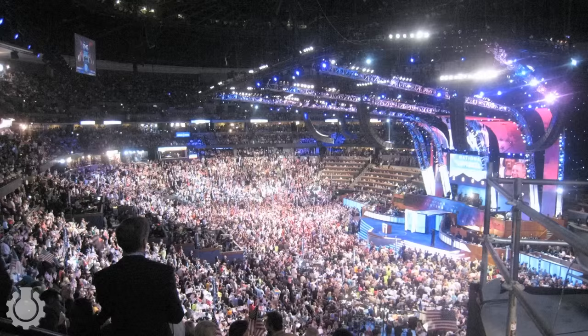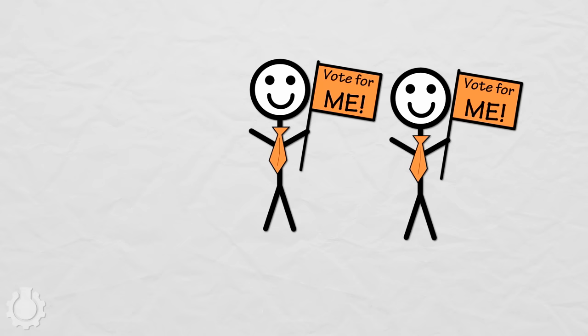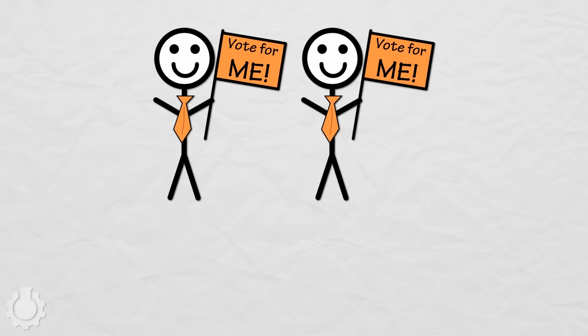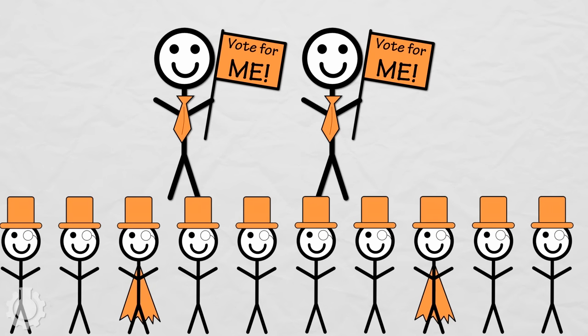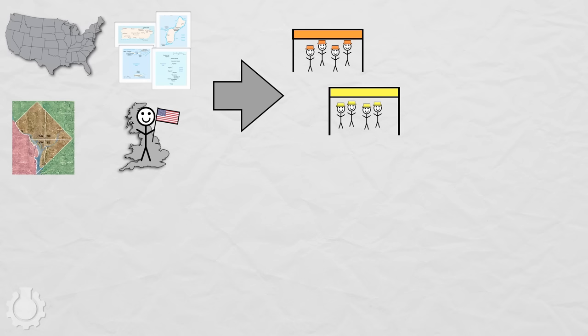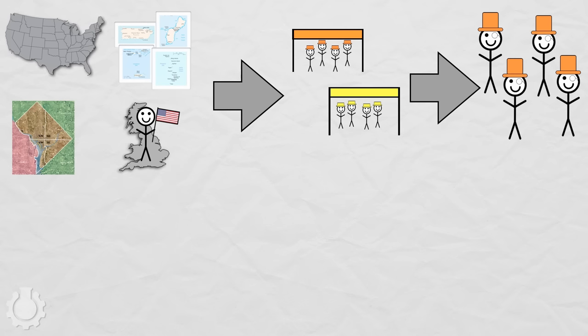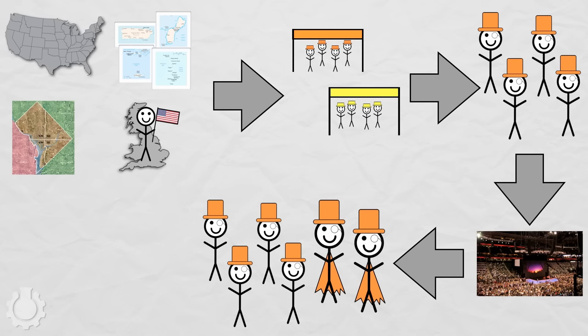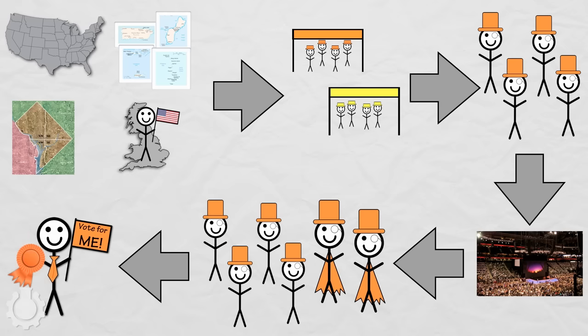Usually by the time the National Convention happens, all the candidates save one have dropped out of the race, so the convention is just a rubber stamp and a big party. But if the fight between candidates is still ongoing, the delegates and superdelegates are the ones with the final decision. In summary, over the course of a year, the states plus DC plus the territories and Americans abroad hold their primaries or caucuses. The delegates representing the citizens travel to the National Convention, where they meet with the superdelegates to make the final decision on who will be the nominee for president.